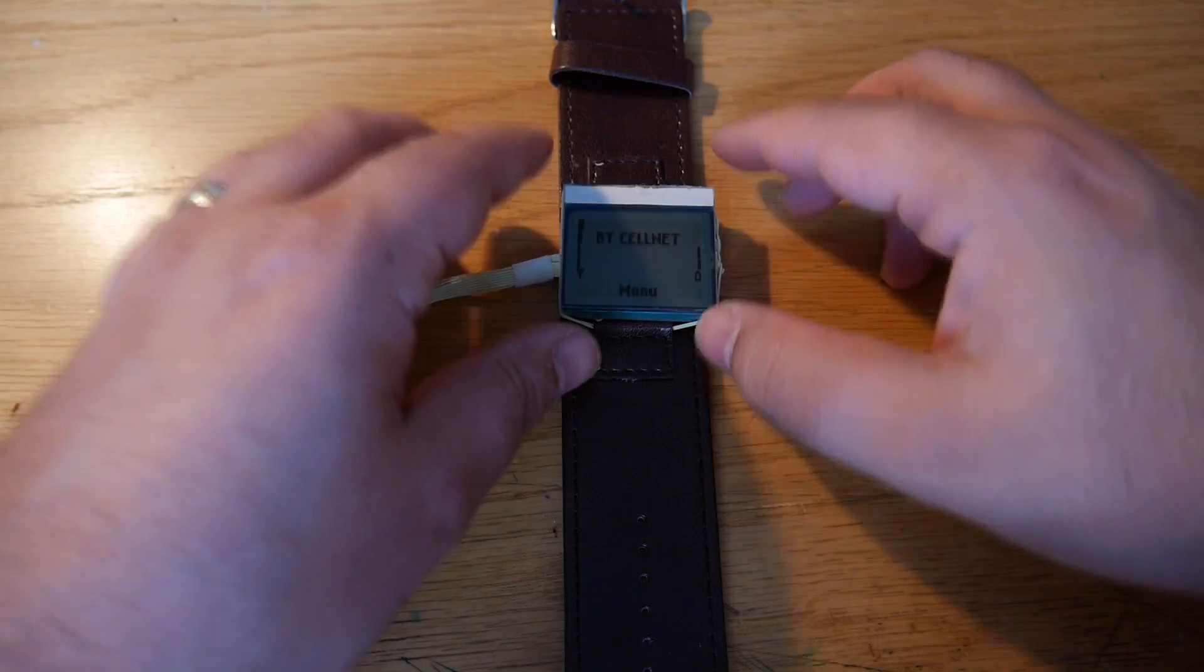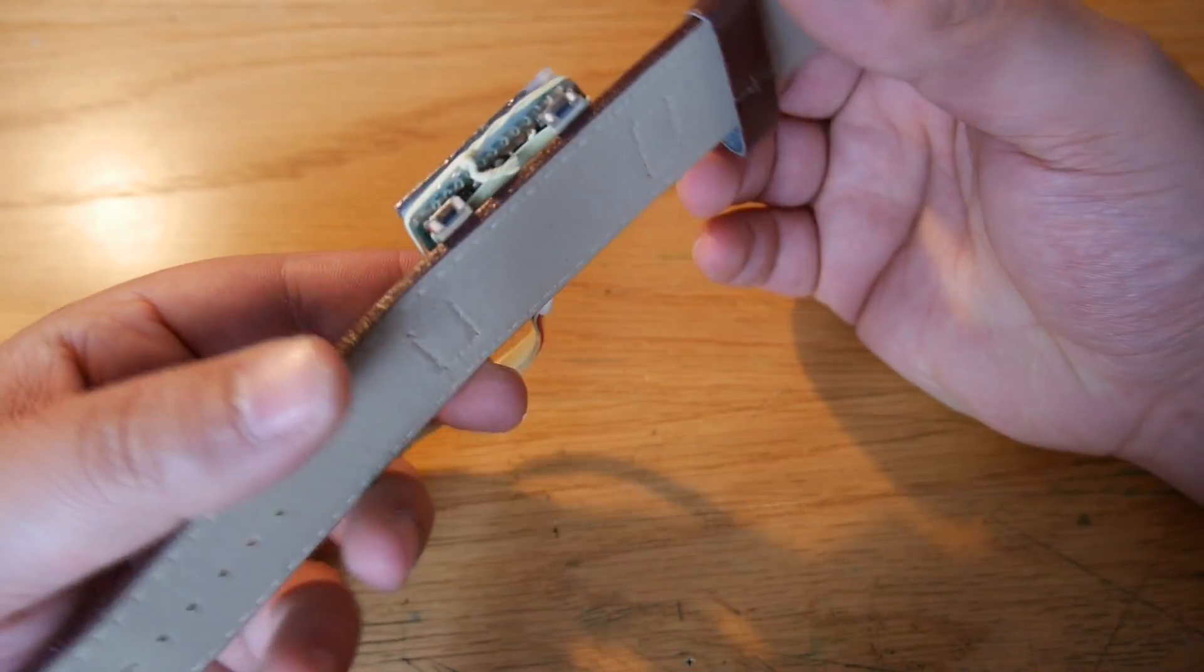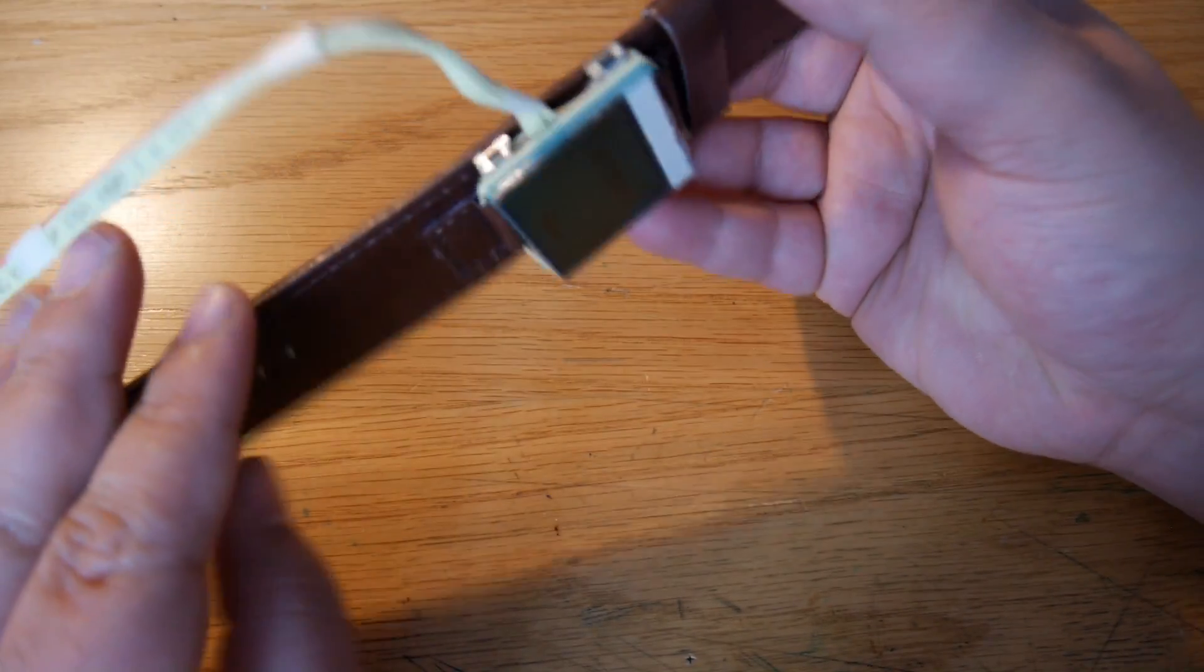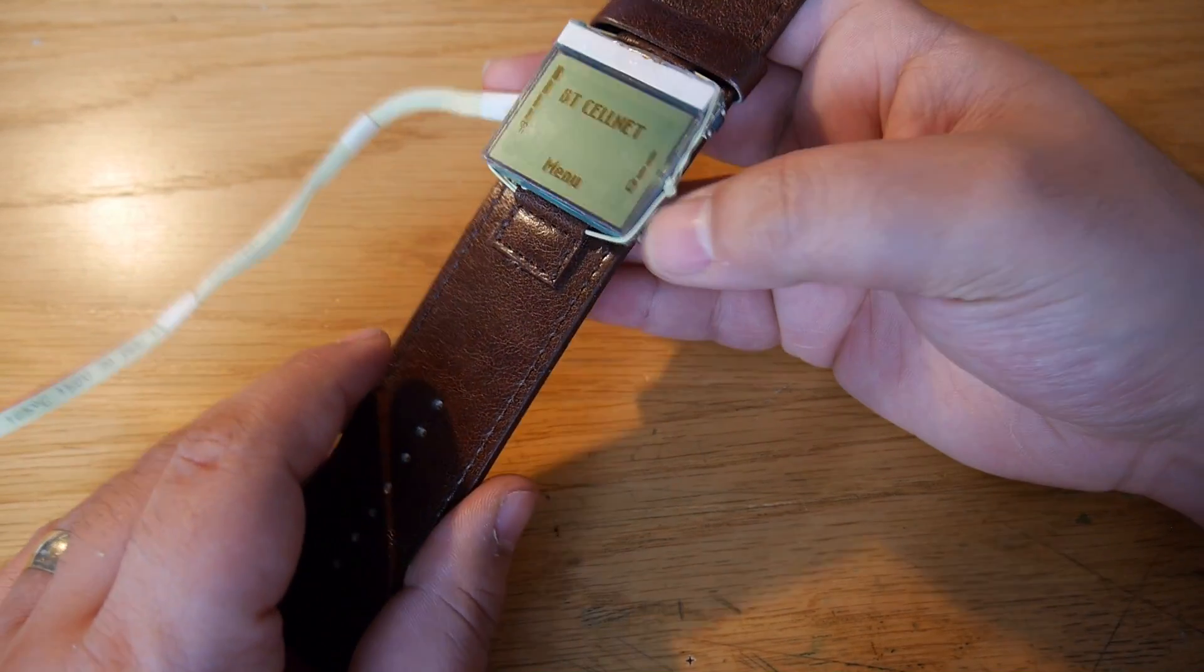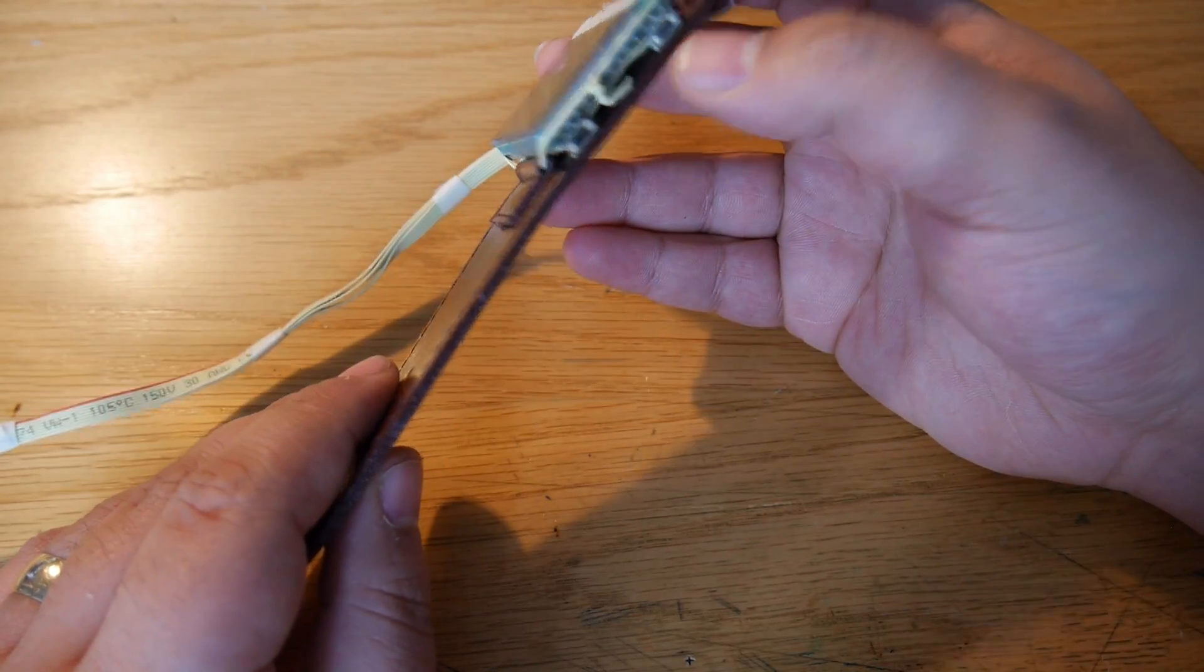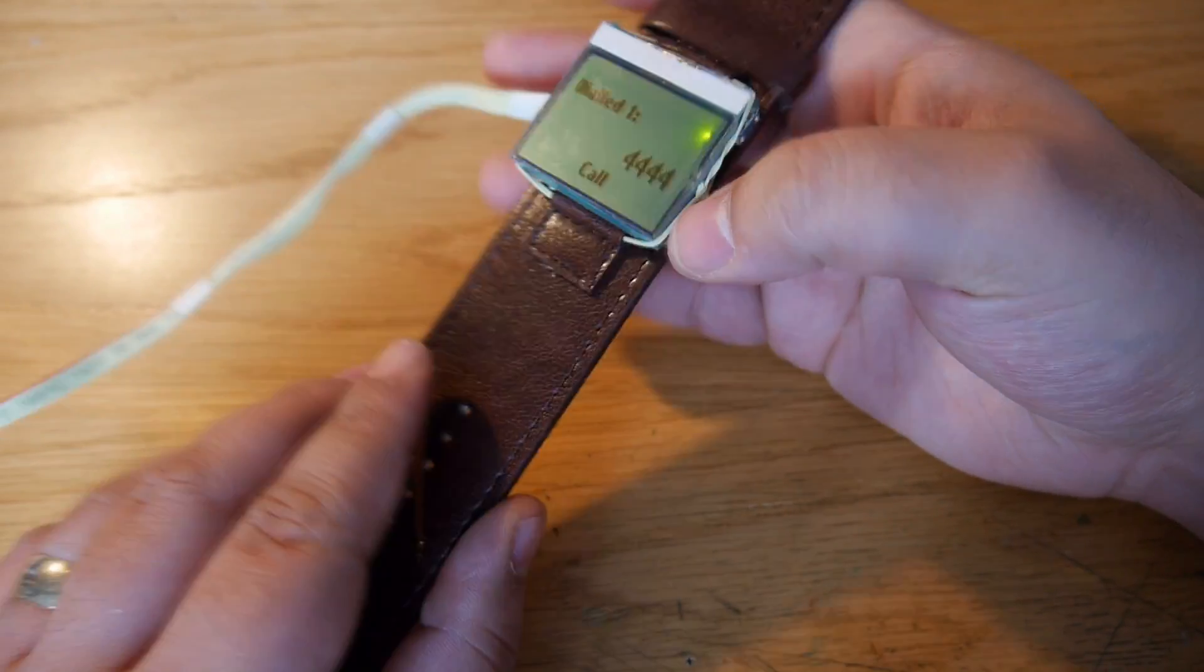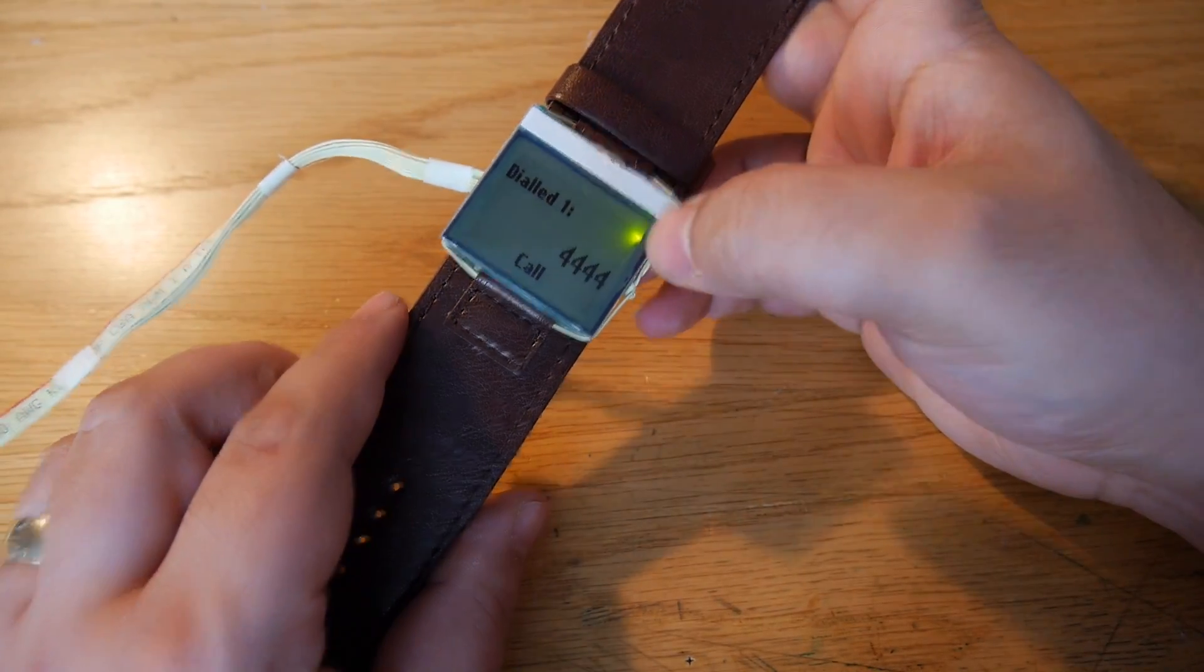So here is the Nokia 3310 smartwatch in its glory, where you can see the design is made out of a prototyping board with the standard original Nokia 3310 LCD, some tack switches which are fully functional on the side. There's four of them, and there's an LED inside the screen.